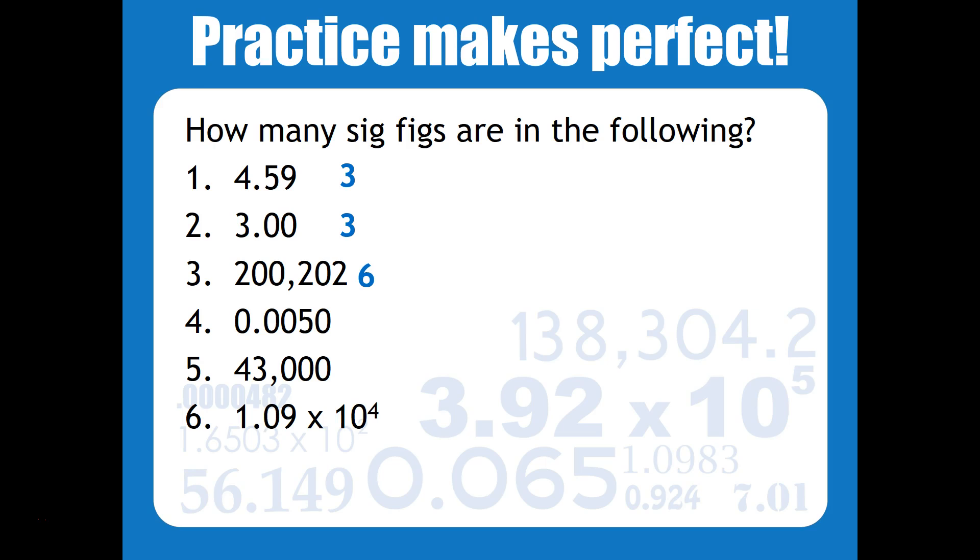Number 4 is a little tricky because you have both leading zeros and trailing zeros. So remember, leading zeros or zeros before the non-zero number are considered not significant ever. But the trailing zero is going to be significant because there is a decimal point here. So that means that there are two sig figs in this number.